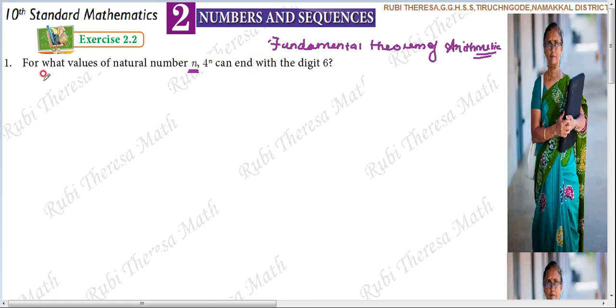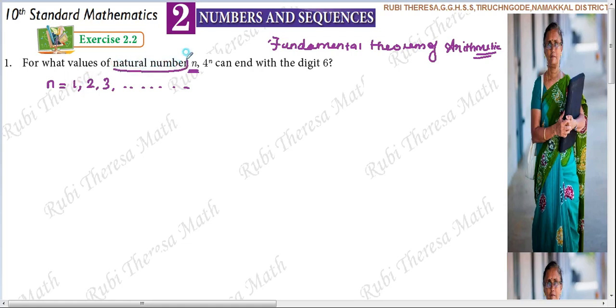Natural number N denotes 1, 2, 3 and so on. We can't start from 0 because they have mentioned that it is a natural number.